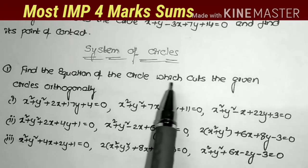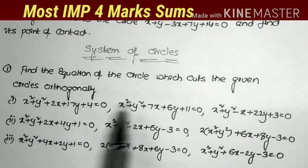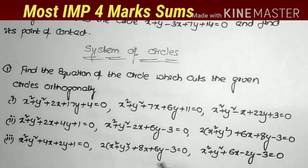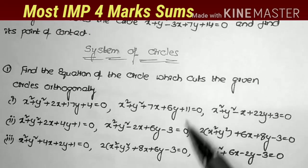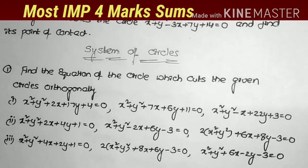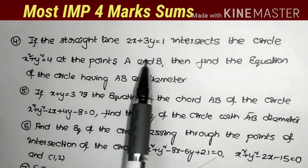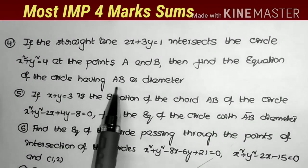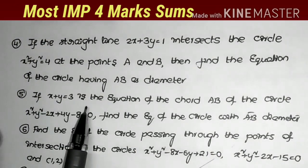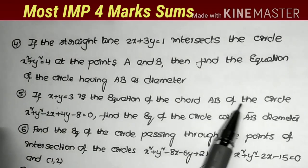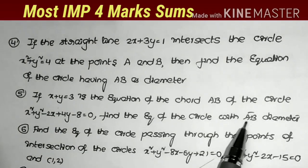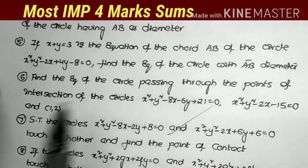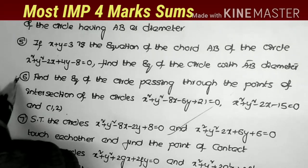First: find the equation of the circle which cuts the given circles orthogonally (three circles are given). Second: if the straight line 2x + 3y = 1 intersects the circle at points (a, b), find the equation of the circle having AB as diameter. Same model: if x + y = 3 is a chord of the circle, find the equation of the circle with AB as diameter. Next: find the equation of the circle passing through the point of intersection of the circles and through (1, 2). Most important model.